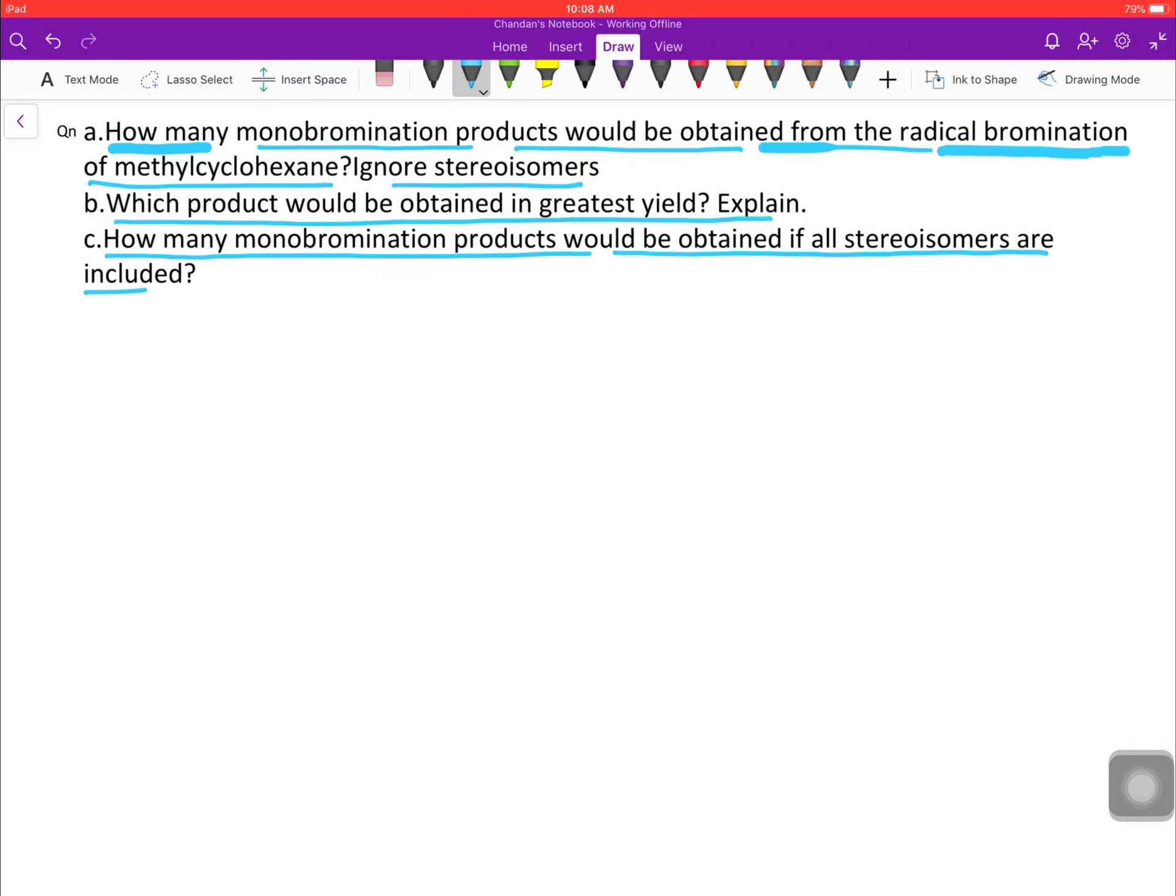Now let's proceed. This is methylcyclohexane. When we do the bromination, that is Br₂ in presence of hν or heat, in the presence of sunlight or heat, what will be the bromination products? Let's see.